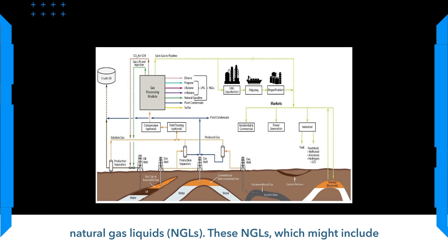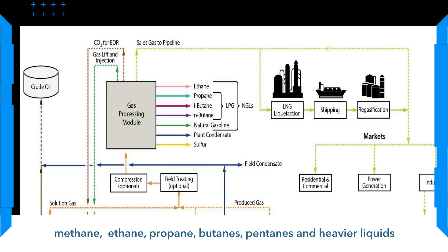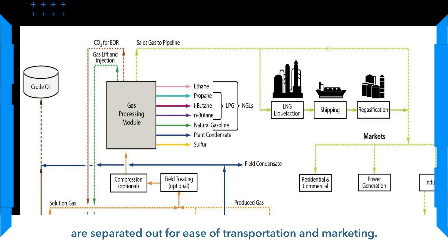These NGLs, which might include methane, ethane, propane, butanes, and heavier liquids, are separated out for ease of transportation and marketing.